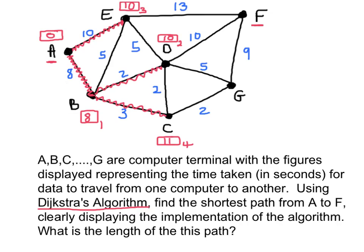The algorithm begins again. It looks out from C and has only one choice: C→G, with a combined weight of 11 plus 2, which is 13. From D there are two options: D→G at 15 and D→F at 20. From E there is one option, E→F at 23. The algorithm chooses the shortest, which is C→G at 13. So I put 13 as the label on G, and that's my fifth run of the algorithm.